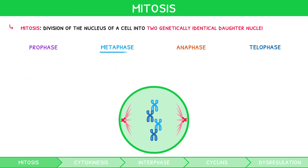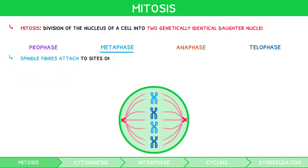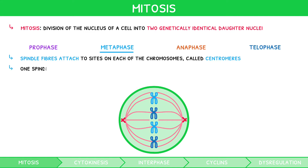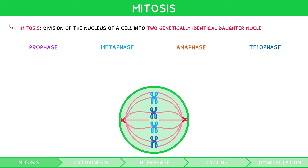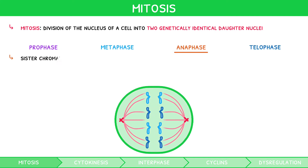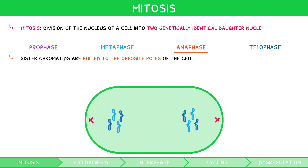During metaphase, spindle fibres attach to sites on each of the chromosomes called centromeres. It is important to appreciate that one spindle fibre from each pole is attached to each sister chromatid in every chromosome. The chromosomes move to the equator, i.e. the middle of the cell. During anaphase, the sister chromatids are pulled to the opposite poles of the cell, causing them to separate.